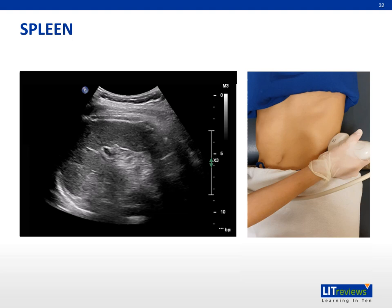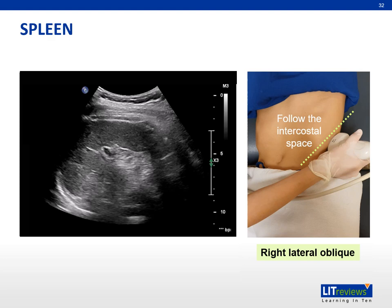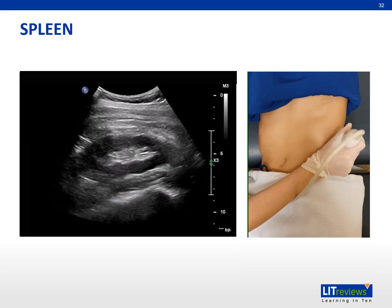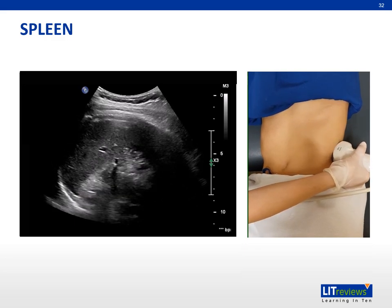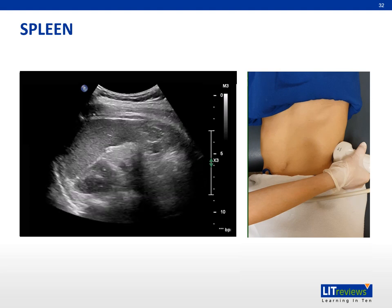The spleen lies in the left upper quadrant of the abdomen. To achieve the longitudinal position, the patient is placed in a right lateral oblique position with the transducer aligned along an intercostal space. It is often helpful to raise the patient's left arm to widen the intercostal space. Angle the transducer slightly cranially. The spleen is examined in its entirety by sweeping the transducer medially or laterally through the intercostal spaces. A small round isoechoic nodule near the inferior pole represents an accessory spleen, or splenunculus, most commonly located at the splenic hilum. Its vascular supply from the main splenic artery can be confirmed with colour Doppler.